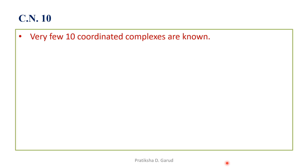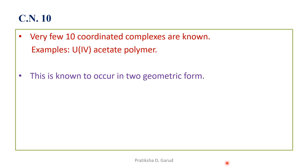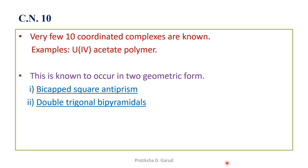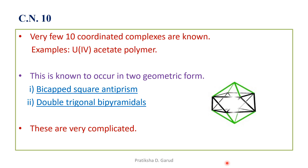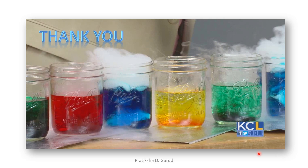Coordination number ten has very few known complexes. An example is the uranium(IV) acetate polymer. It is known to occur in two geometric forms: the bicapped square antiprism and the double trigonal bipyramidal. These two geometries are very complicated, but here the bicapped square antiprism is shown as the first example of this coordination number.